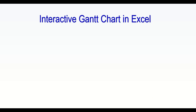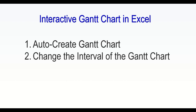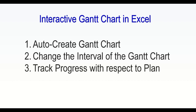Today we will see how to prepare an interactive Gantt chart in Excel which will auto-create the Gantt chart if you provide the start date and finish date. It will change the interval of the Gantt chart — whether you want 2 days, 3 days, 7 days, or whatever duration you like — and it will also be able to track the progress of the work with respect to the plan.